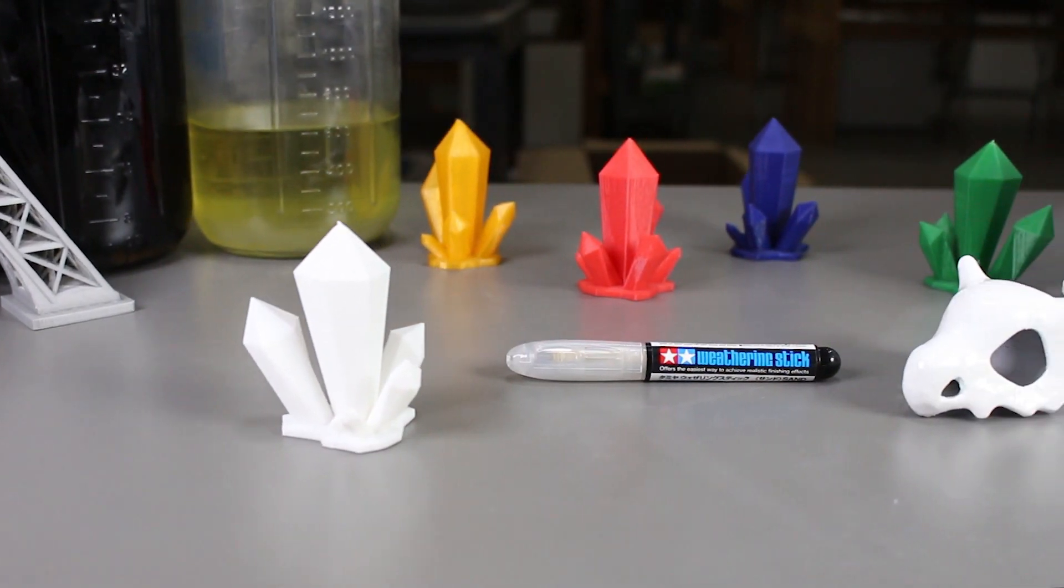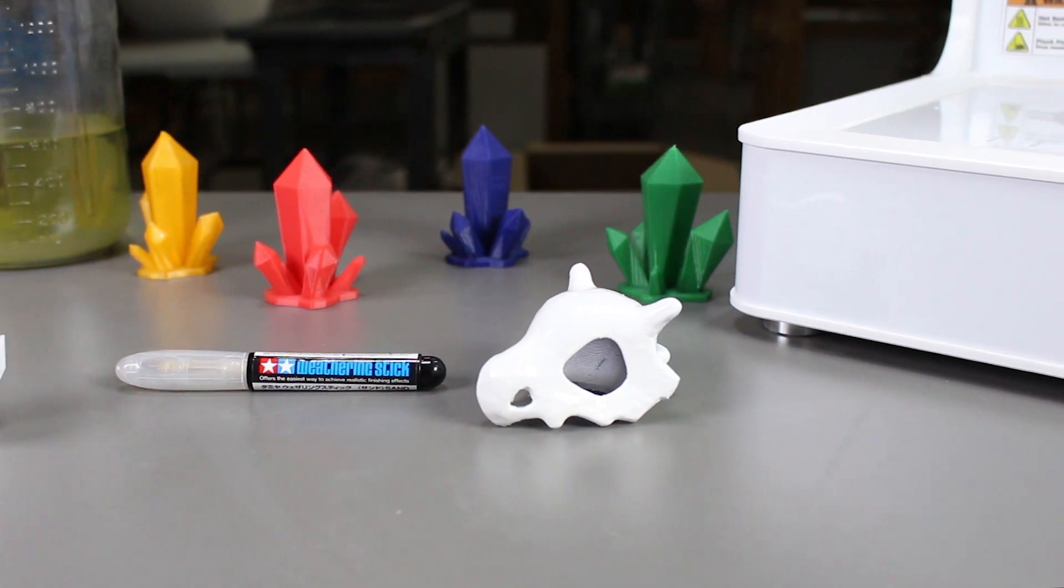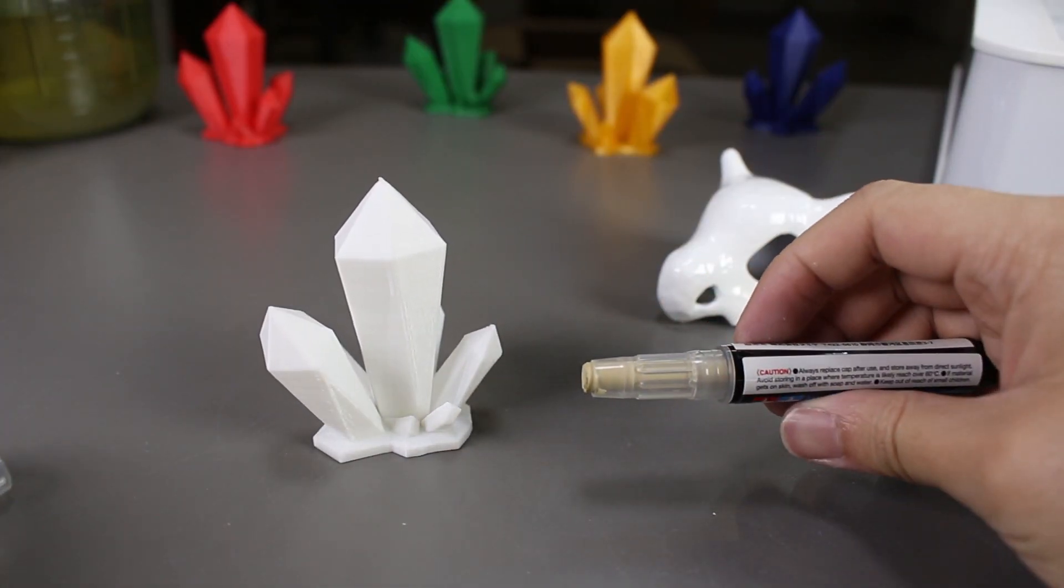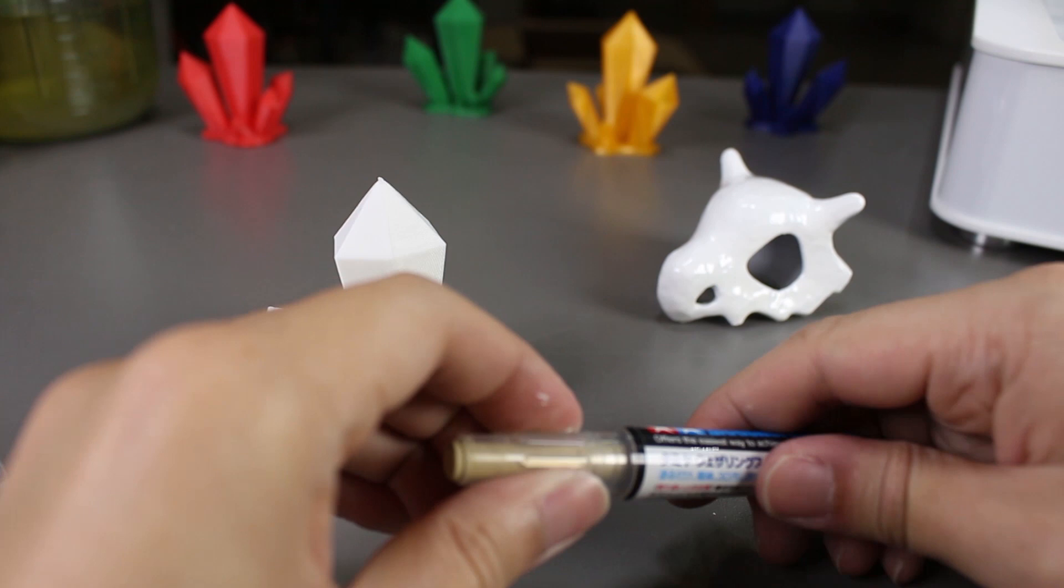This weathering stick applies an effect that makes your print or object look like it's been through the desert or just having that worn out look. Let's start.